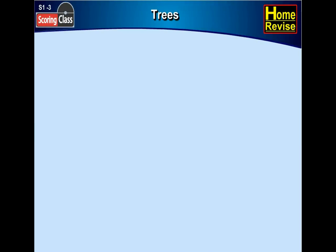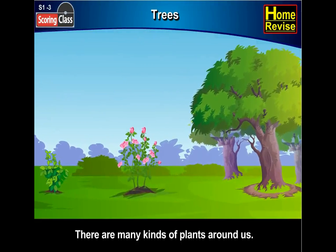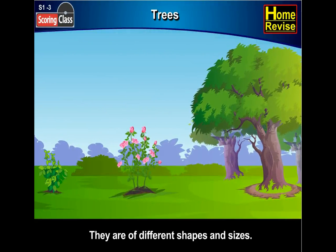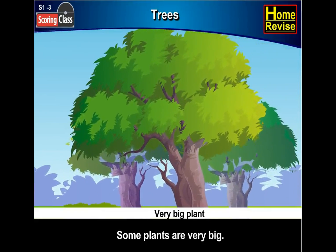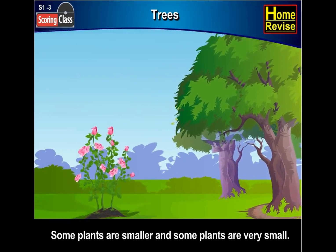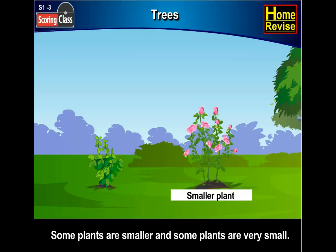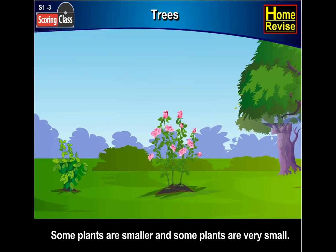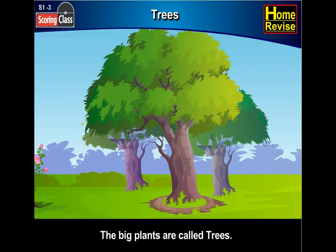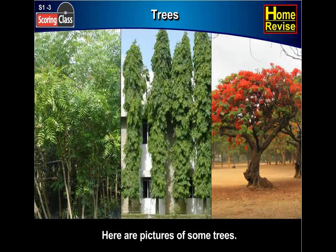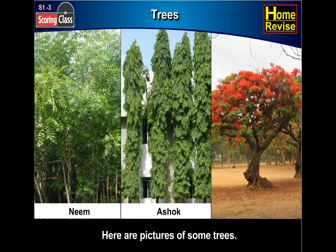Trees. There are many kinds of plants all around us. They are of different shapes and sizes. Some plants are very big, some plants are smaller, and some plants are very small. The big plants are called trees. Here are some pictures of some trees — this is a neem tree, this one is an ashok, and this is a beautiful gulmohar tree.